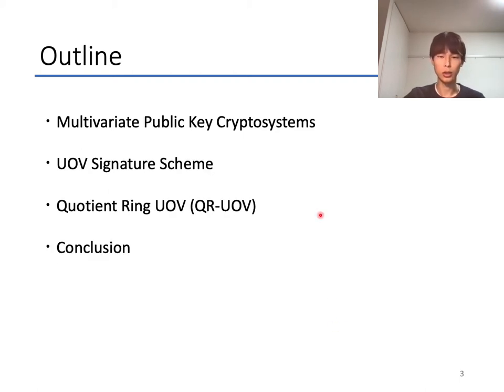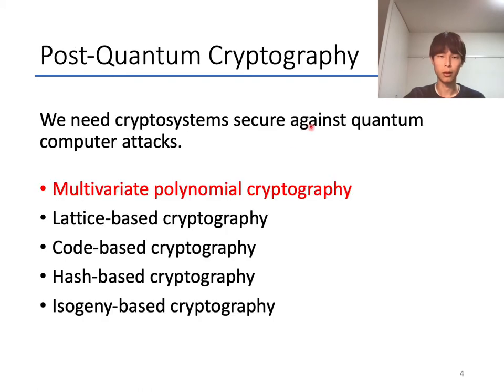This is the outline of my presentation. First, let me talk about multivariate public key cryptosystems. Post-quantum cryptography is a cryptosystem secure against quantum computers, and there are several candidates like this. In this presentation, I talk about multivariate polynomial cryptography, which is constructed based on the MQ problem.